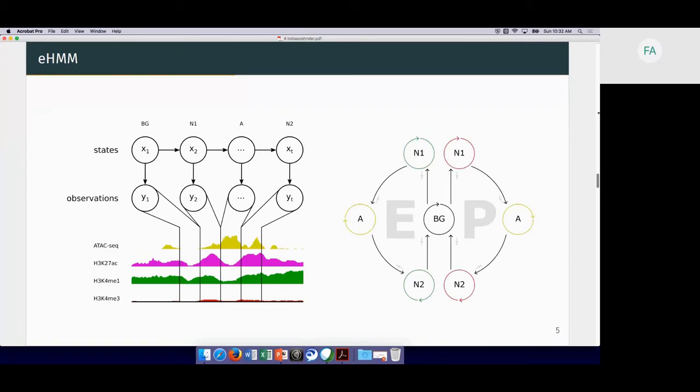The unique characteristic of the method is the transition matrix, which is the Markov chain of the model. Basically, if the model is in a background state, it can only leave this background state towards either the enhancer submodel or the promoter submodel by doing this in a directed fashion. It would have to leave towards the first nucleosome state, then a state representing accessibility, going to a second nucleosome and back to the background. You can see that back transitions are not allowed. Also, going directly from the background to an accessible region is not allowed. By this we try to recover the molecular structure that we think of when we think about enhancers.